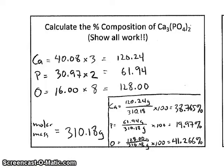Here's the solution to that percent composition problem using calcium phosphate as our compound that we were using. We have calcium. Calculating the mass from that would be 120.24. From phosphorus, 61.94. From the oxygen, 128.00. To get a total molar mass of 310.18 grams.